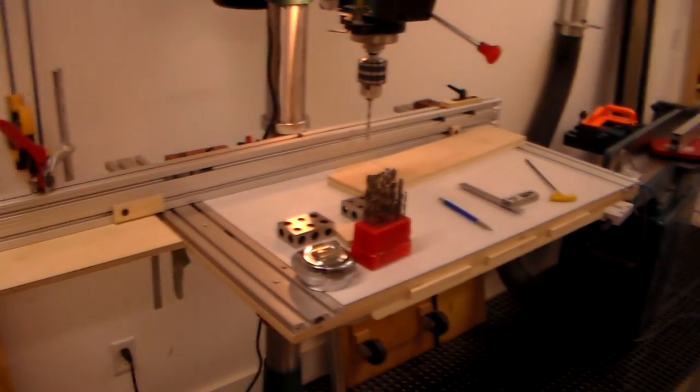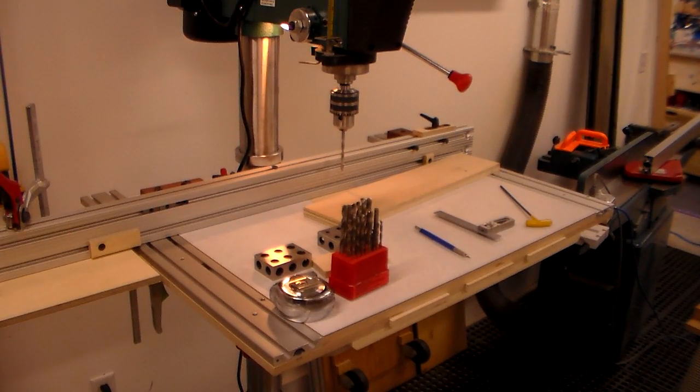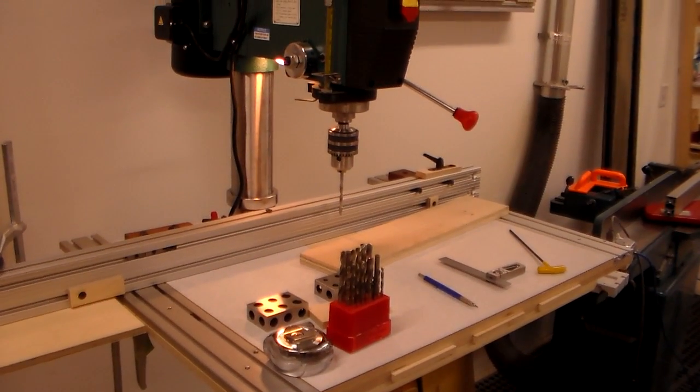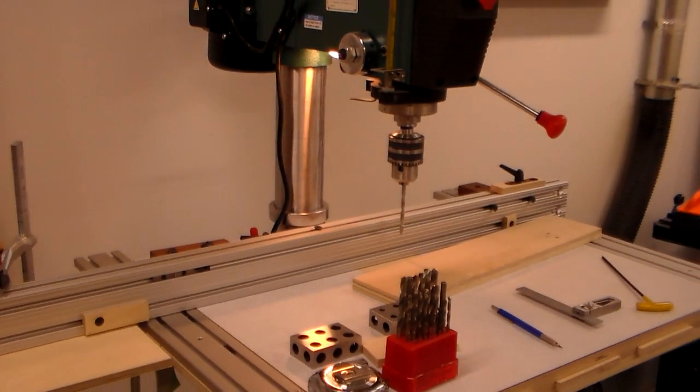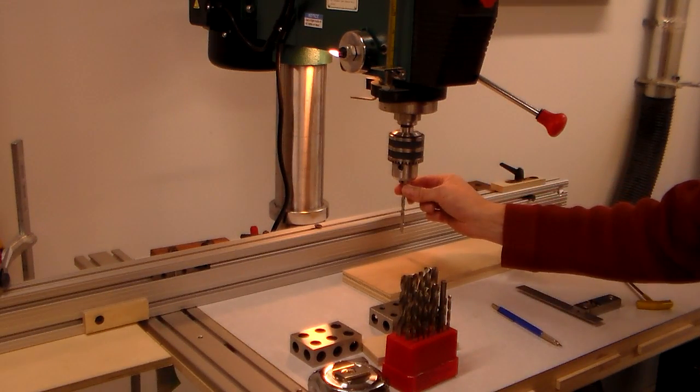All right, so what I want to do is locate a hole from the edge of my plywood and then precisely index from that location to another location that I need to drill my first hole. So I'm just going to pick some numbers out of the air to show you what I have in mind. All right, so what I've got chucked up is a quarter inch bit.